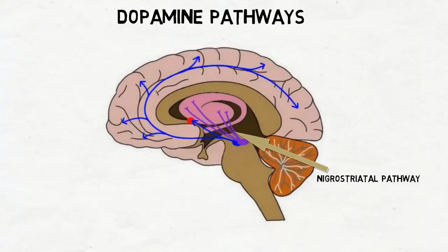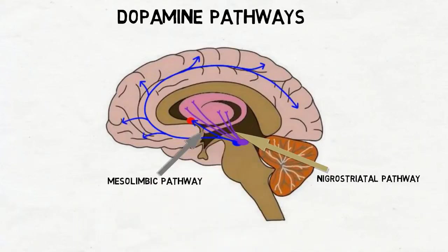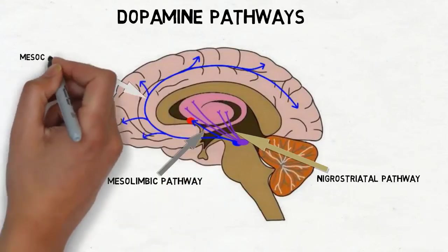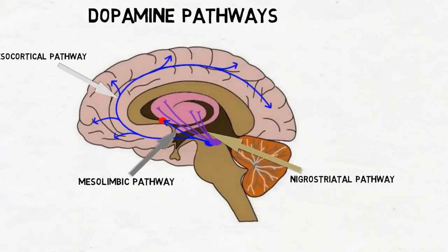The mesolimbic pathway, which stretches from the ventral tegmental area to the nucleus accumbens and other limbic structures, and the mesocortical pathway, which stretches from the ventral tegmental area throughout the cerebral cortex.